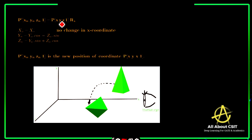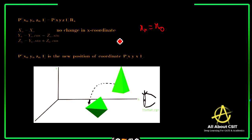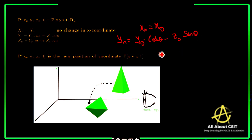So for rotation about the X-axis, the new coordinates P′ = P × Rx. Xn equals X₀ only — no change in the X coordinate. Yn equals Y₀·cosθ − Z₀·sinθ. Zn equals Y₀·sinθ + Z₀·cosθ. These formulas give the new coordinate positions after rotation about the X-axis.